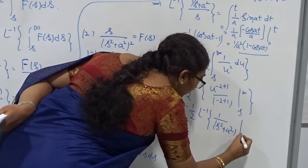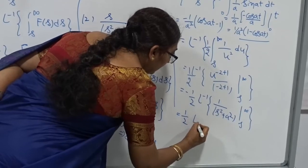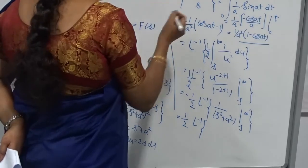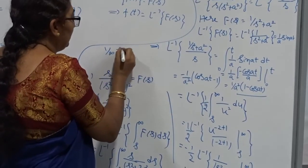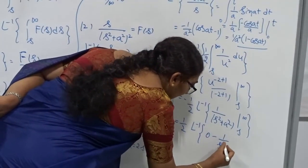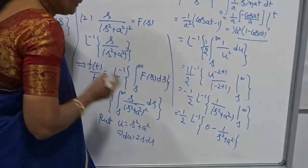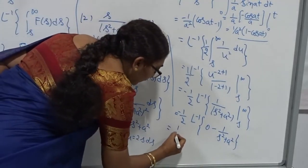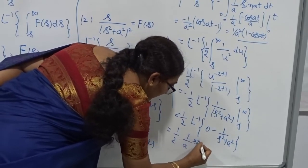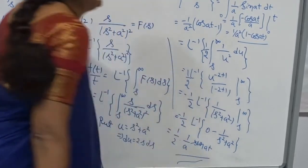So f(t)/t = L-inverse of 1/(s² + a²). You already know the standard formula: L-inverse of 1/(s² + a²) = (1/a)·sin(at). Therefore, f(t)/t = (1/a)·sin(at), which gives f(t) = (t/a)·sin(at). This is the answer. This problem is a little bit tougher compared to that, but now you can see: L-inverse of s/(s² + a²)² = (t/a)·sin(at). This is solved using the second standard formula.